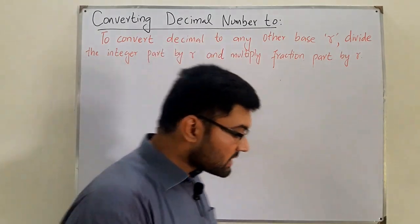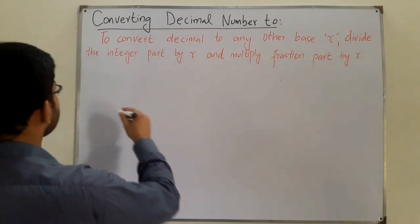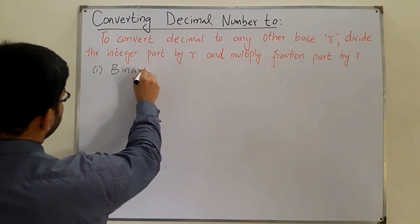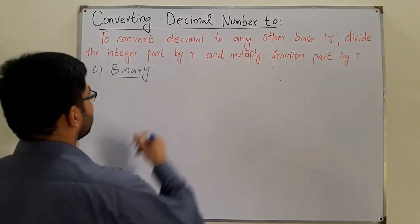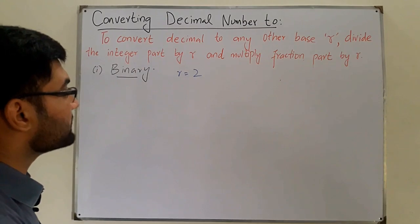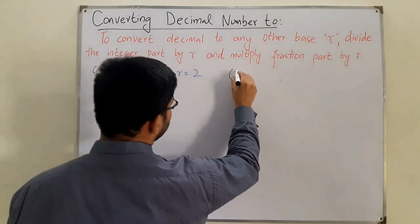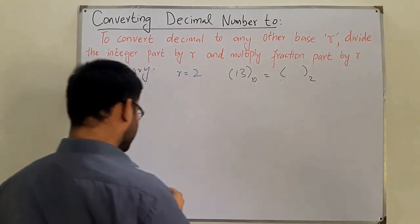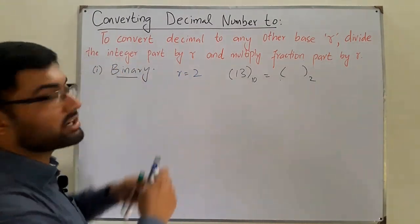We'll explain it through an example. First, converting decimal into binary. In the case of binary, the base r is equal to 2. We have two numbers: 0 and 1. For this example, we convert 13 in decimal to its binary equivalent. This example is taken for simplicity — there is no fractional part.